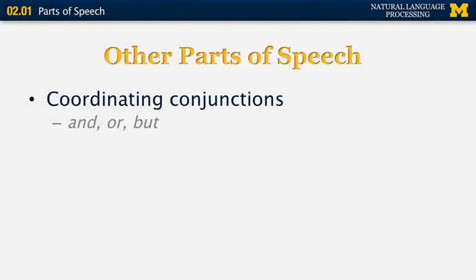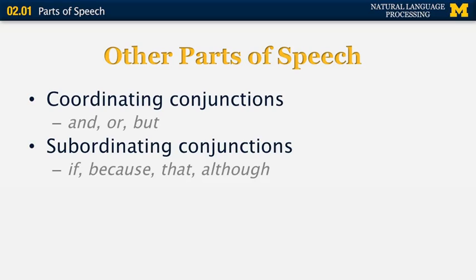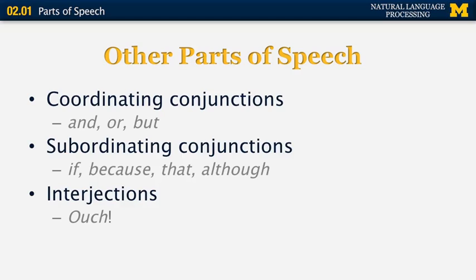Other parts of speech include coordinating conjunctions such as 'and,' 'or,' and 'but,' which connect similar parts of a sentence — for example, 'apples and oranges.' Subordinating conjunctions connect unequal portions of a sentence; for example, 'unless' in 'I will not go home unless you give me money' introduces an entire relative clause. Finally, interjections are things like sounds such as 'meow' or 'ouch.'